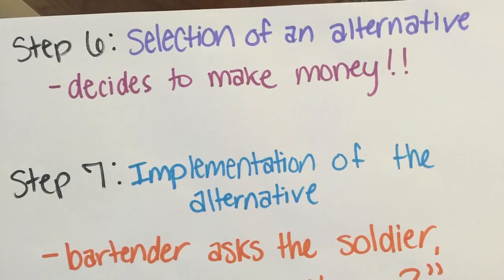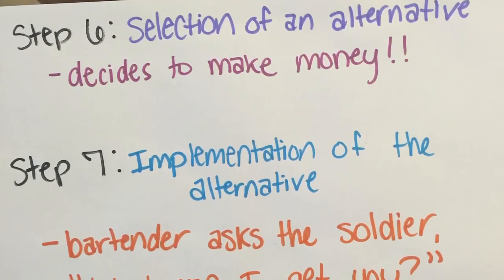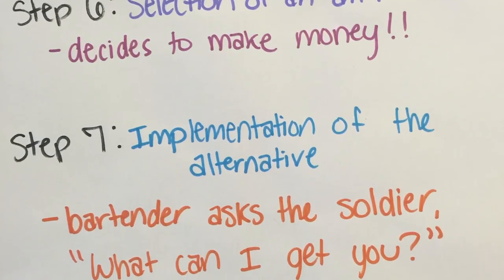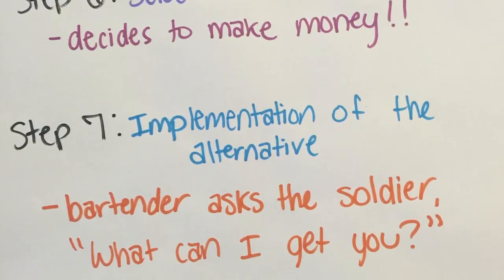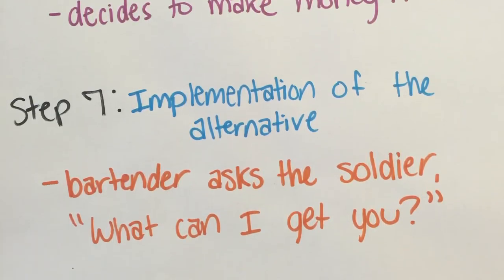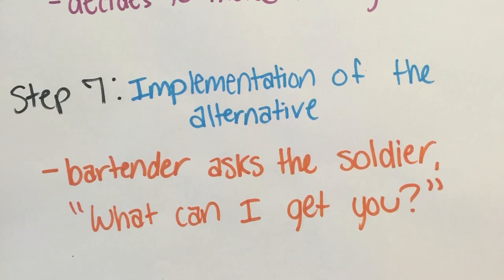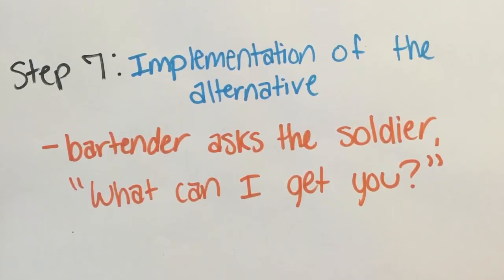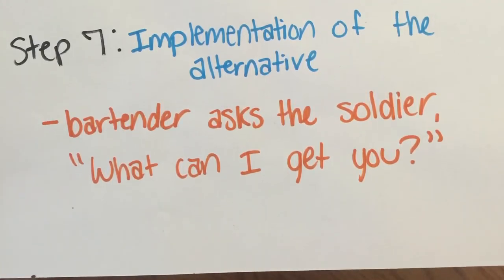Step 6: Selection of alternatives. He decides to make money. Step 7: Implementation of the alternative. The bartender asks the soldier, 'What can I get you?'